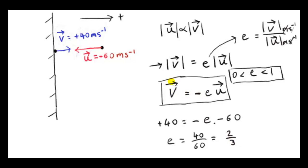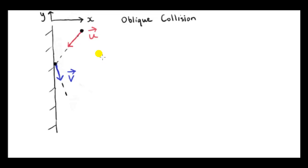The final velocity vector v is always a scalar multiple of the initial velocity vector u, and that scalar is negative. So if we double vector u, we double the magnitude of vector v; if we triple vector u, we triple the magnitude of vector v. Now let's take the situation where the collision is not head-on — at some angle other than 90 degrees. We call this an oblique collision.